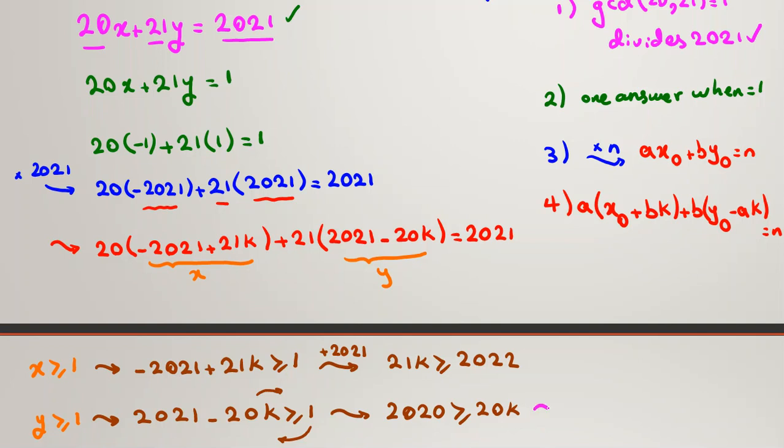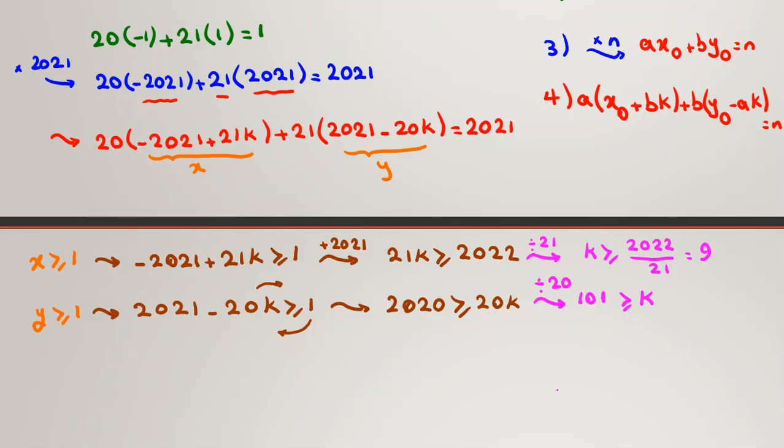Now, if we divide both sides by 20, so K will be at most, 2020 over 20 will be cancelled, 202 over 2 is 101. Now, here, if we divide both sides by 21, K is greater than or equal to 2022 over 21, which you can say, it's 96 point something. Let's divide, it's 2022, and divide it by 21, you can say 96.